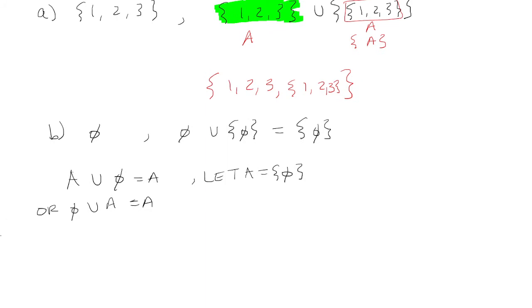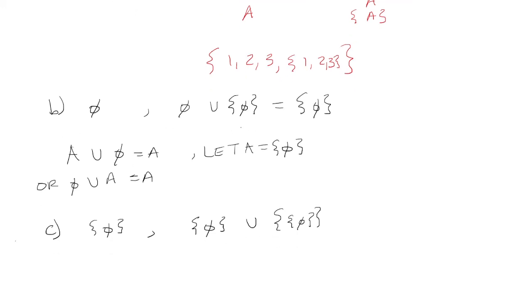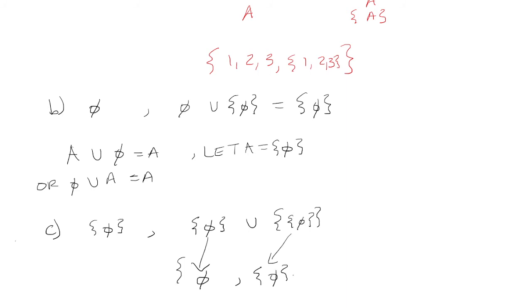Next example: we want the successor of the set that contains the empty set. So that is the set that contains the empty set, union the set of the set that contains the empty set. Now this is not the same thing as what we did in part B. You're just going to combine these two together. Actually, I made a mistake — we should not be using the curly braces. So we're just looking at what's inside the curly braces, which is the empty set, and then what's inside the curly braces here is the set that contains the empty set.